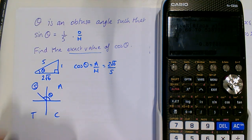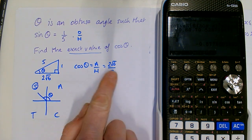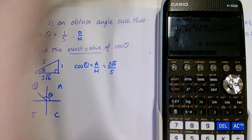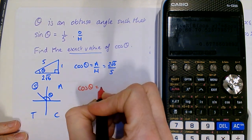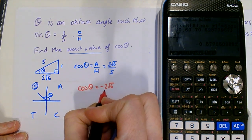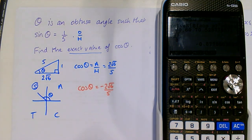Now, in this section, only sine gives positive answers. So that means cos must actually be negative. So the final answer would be cos theta is negative 2 root 6 over 5.